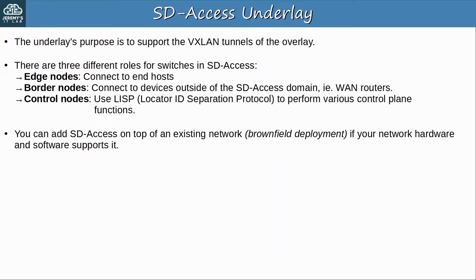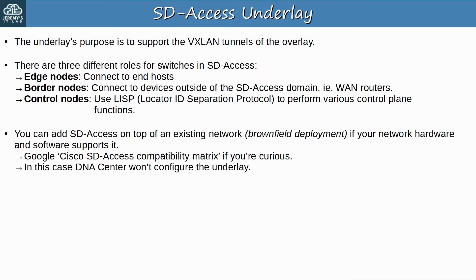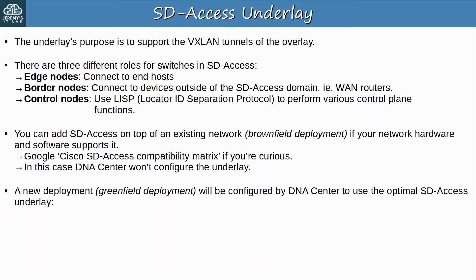You can add SD Access on top of an existing network if your network hardware and software supports it. This is called a brownfield deployment — when you add it on to an already existing network. In this case DNA Center won't configure the underlay, because this could be a major risk to the current working production network. Ideally, you will be using a greenfield deployment, which is a totally new network built for the purpose of SD Access. In this case DNA Center will configure the devices for the optimal SD Access underlay. For example, all switches are Layer 3 and use IS-IS as their routing protocol — that's why I mentioned IS-IS in the example earlier.